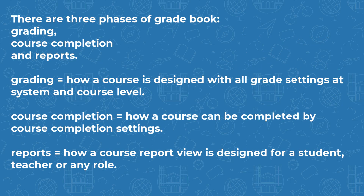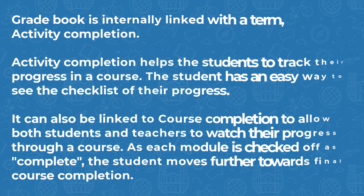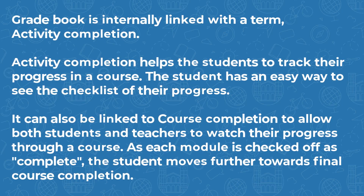There are three phases of gradebook: grading, course completion, and reports. Grading defines how a course is designed with all grade settings at system and course level. Course completion defines how a course can be completed by course completion settings. Reports defines how a course report view is designed for a student, teacher, or any role. The gradebook is internally linked with activity completion.